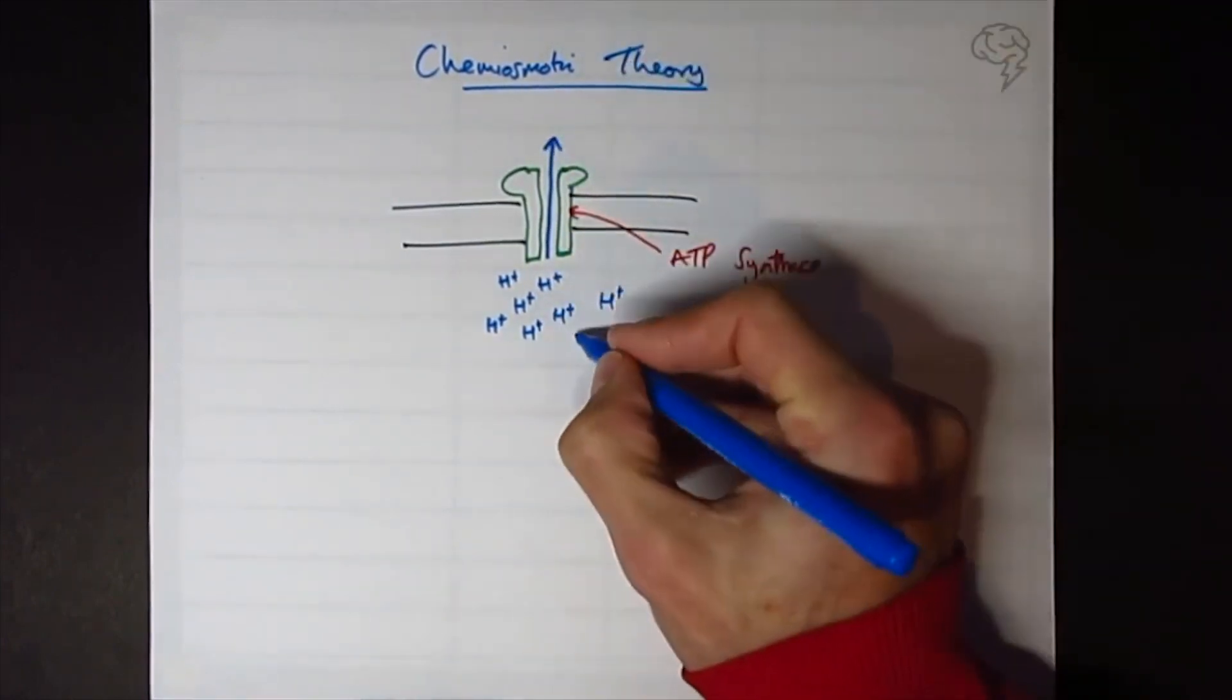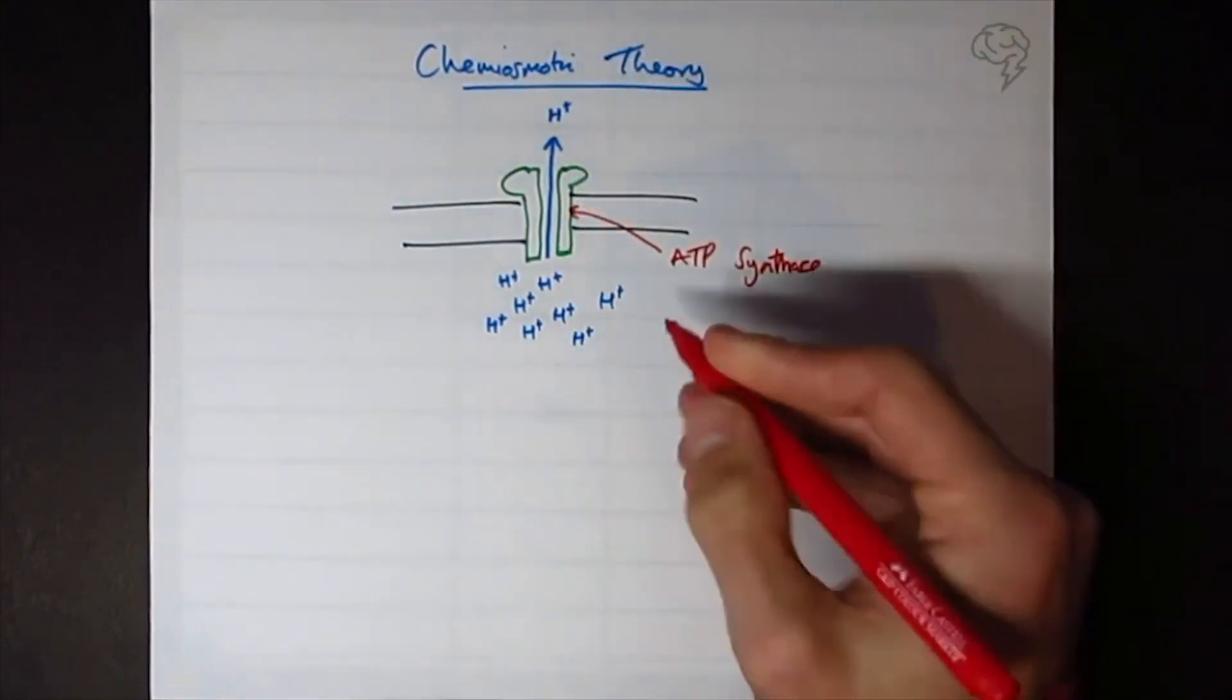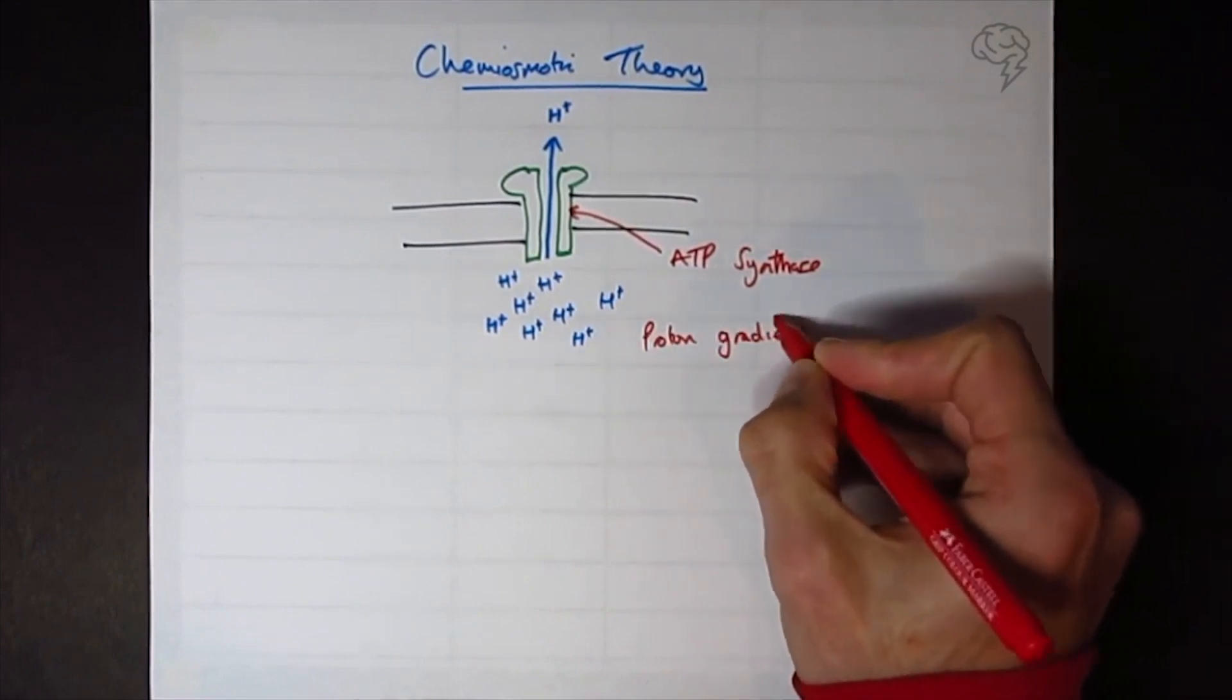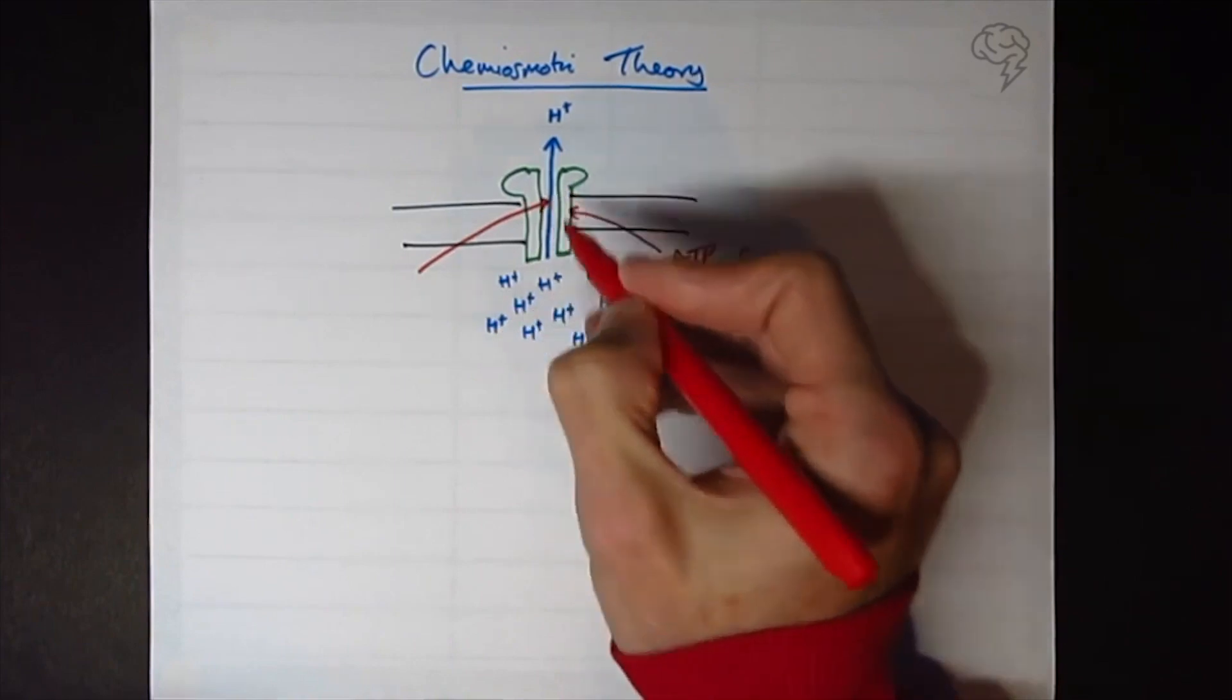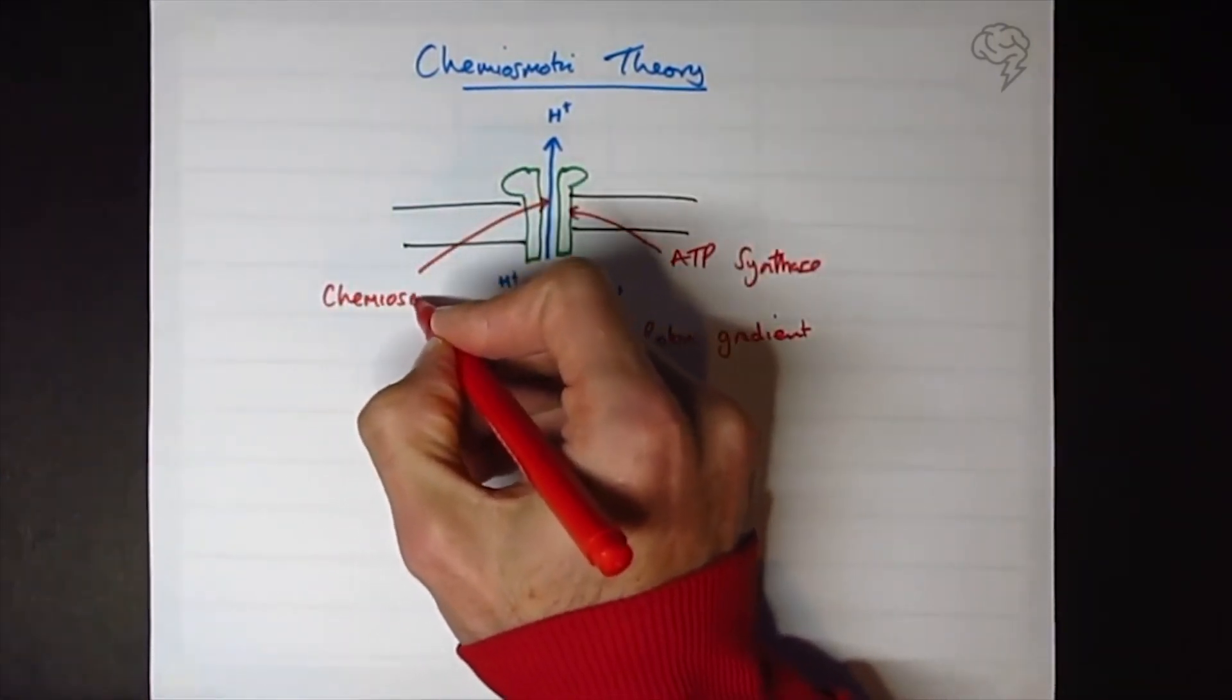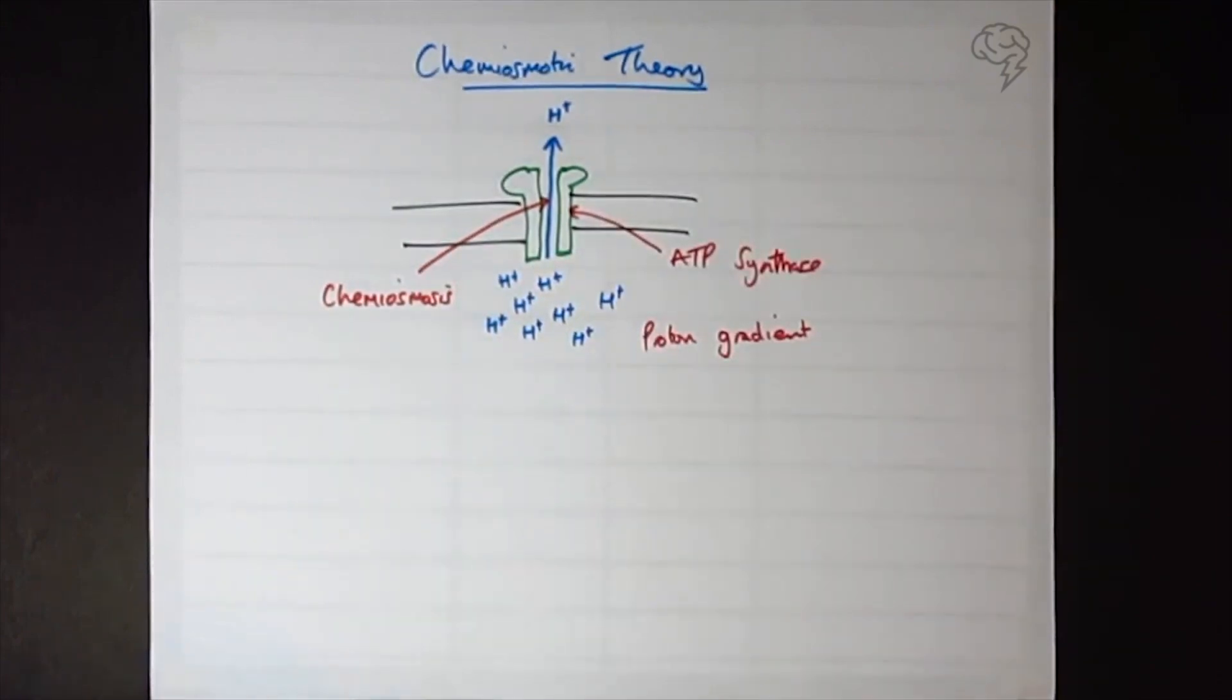So we're going to form lots of protons on one side of a membrane and not so many on the other side of the membrane, forming a proton gradient. Those protons are then going to diffuse down their concentration gradient via or through ATP synthase, and this process here, the diffusing process, is known as chemiosmosis. So this is basically going to be the diffusion of hydrogen ions through ATP synthase.